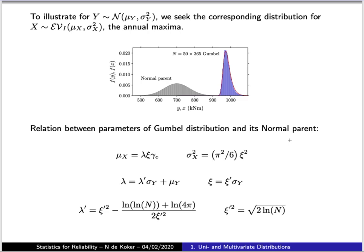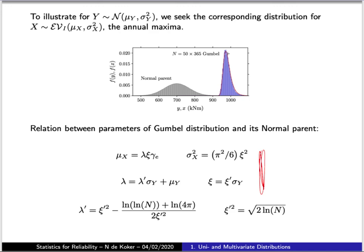If you know the parent distribution, you can analytically calculate the Gumbel distribution parameters for a given return period. For an annual maximum of 50 × 365 values with a normally distributed parent, the Gumbel parameters are given by specific equations requiring the number of values and the parent's mean and standard deviation. The red curve calculated from those parameters corresponds very closely to the histogram, because 50,000 instances were used.